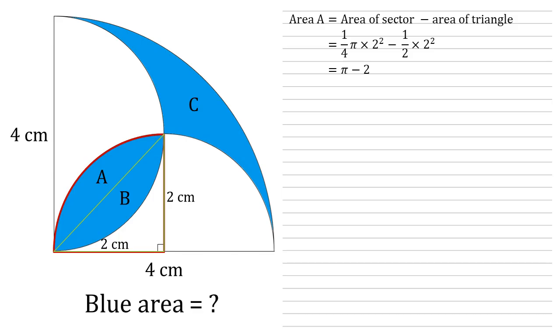Now by the symmetry of our diagram, we can see that B is exactly the same. We could draw the same sector and triangle on the other side, looking into the semicircle on the left. So the area of B is equal to the area of A. So that is also π minus two.